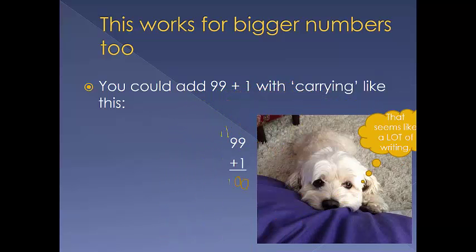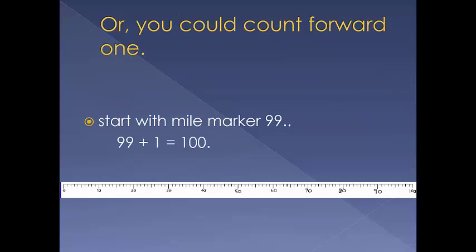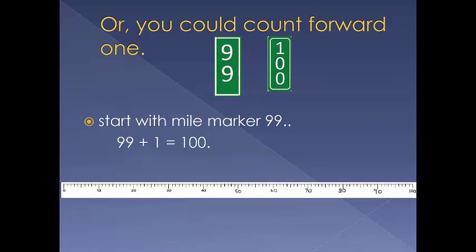That seems like a lot of writing. Or we could count forward one. Start with mile marker ninety-nine. The next marker would be a hundred.